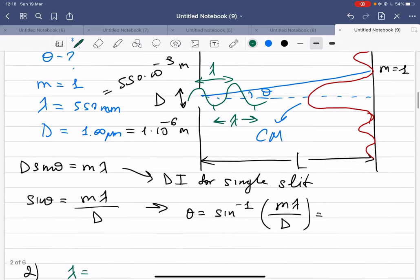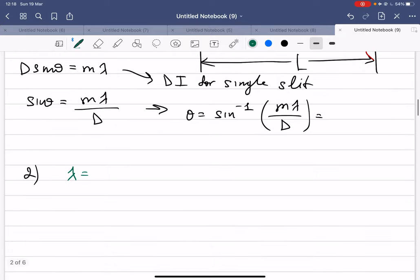So the wavelength here is given as 633 nanometers. So in meters will be 633 times 10 to the power of minus 9 meters. Then the first minimum is given.